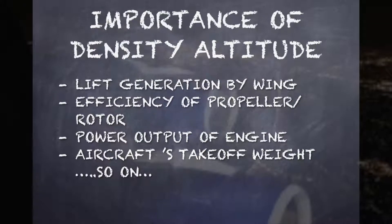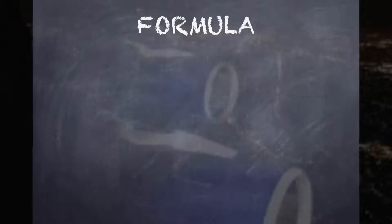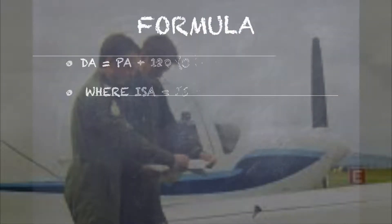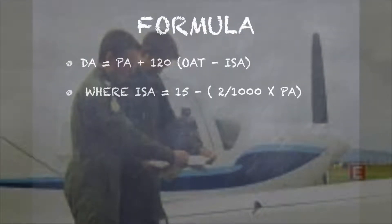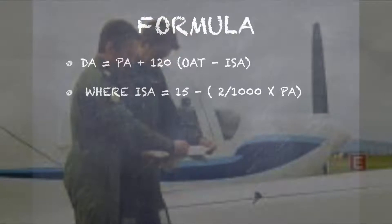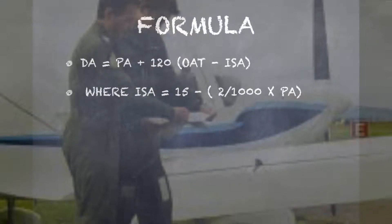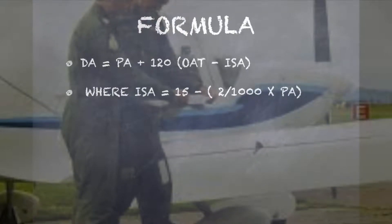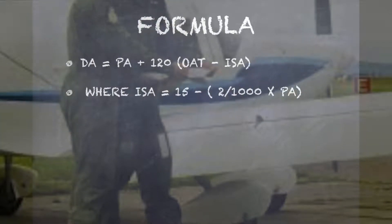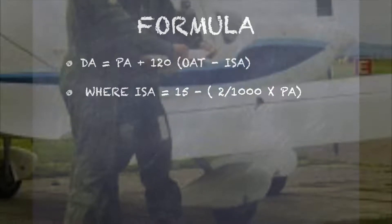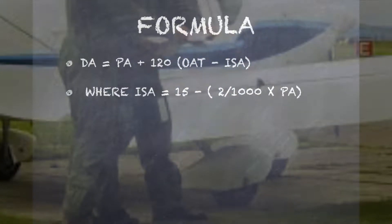Now coming on to the formula which will be used to find density altitude: Density Altitude equals Pressure Altitude plus 120 times Outside Air Temperature minus ISA temperature. ISA is equal to 15, that is 15 is the standard atmospheric temperature at sea level, minus 2 by 1000, that's lapse rate, times pressure altitude.